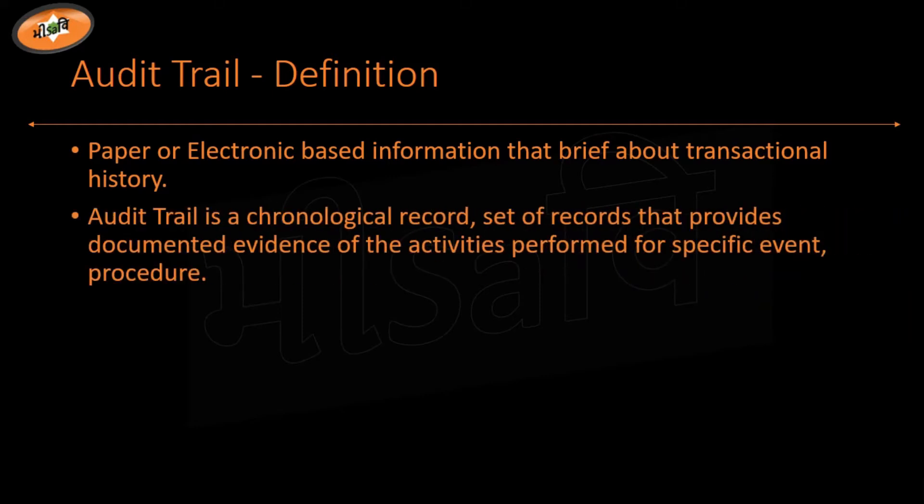Audit trail is a chronological record, or set of records, that provides documented evidence of the activities performed for a specific event or procedure. A group of records which have been documented — if I have that, it is called audit trail.